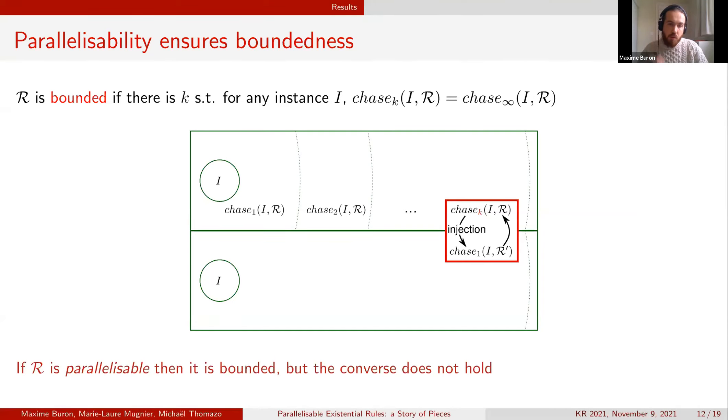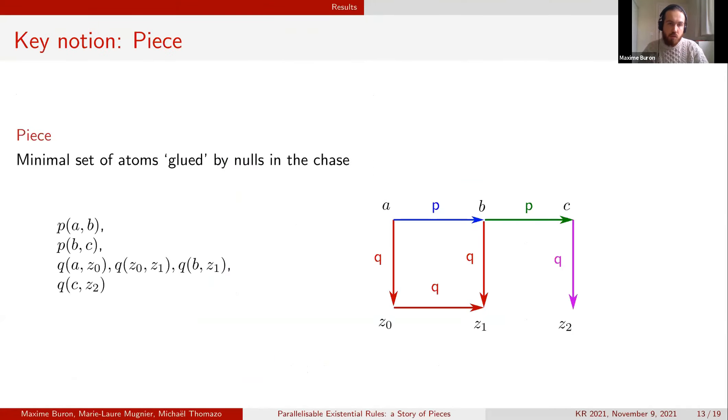Before showing you a counterexample of that I want to introduce you to the notion of pieces which are the minimal set of atoms that are glued together by nulls in the chase. Here you have an example of chase where z0, z1, and z2 are the nulls and the pieces are represented here using a different color.